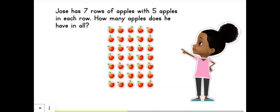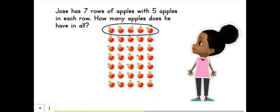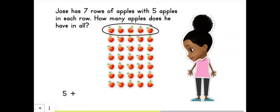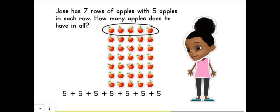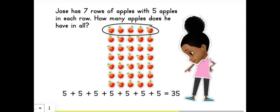Hold on, let me count them all. Wait a minute — because we have an array, we don't need to count them all. Instead, we can use addition or skip counting to find the total. Since each row is considered a group of 5, we can add the 7 groups together. So 5 plus 5 plus 5 plus 5 plus 5 plus 5 plus 5 equals 35. That's easy — it's 35!